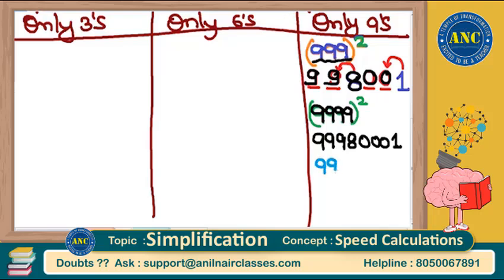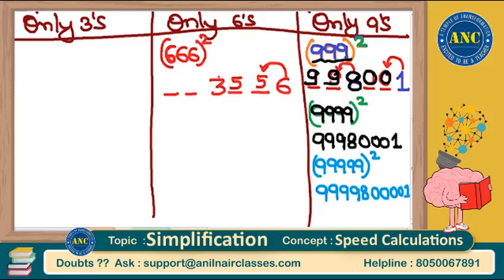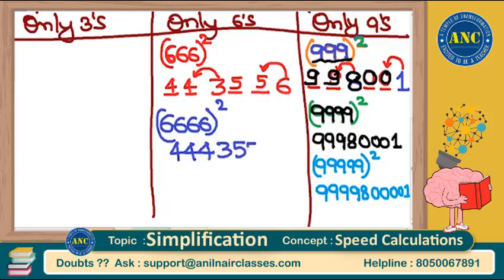For five nines squared: four nines, followed by 8, four zeros, followed by 1. For 666 squared: 6² = 36. Three sixes → two dashes each side. Dashes before 6 become one less than 6 = 5; dashes before 3 become one more than 3 = 4. Answer: 443556. For four sixes squared: answer has three fours, followed by 3, three fives, followed by 6.